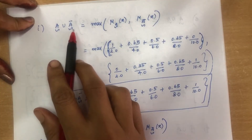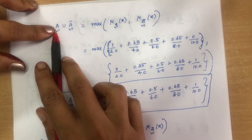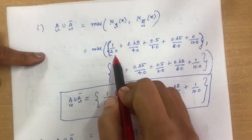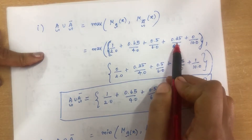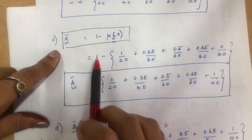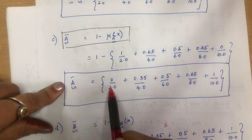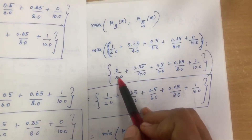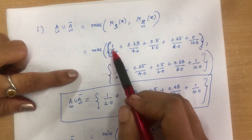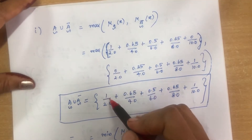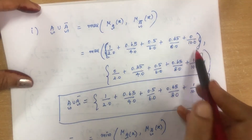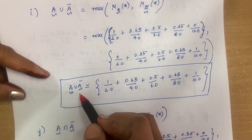For A union A bar, we take maximum of membership value of A and membership value of A complement. A = 1, 0.65, 0.5, 0.35, 0 and A bar = 0, 0.35, 0.5, 0.65, 1. Comparing: max(1,0)=1, max(0.65,0.35)=0.65, max(0.5,0.5)=0.5, max(0.35,0.65)=0.65, max(0,1)=1.